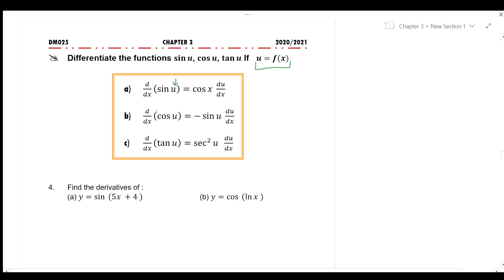To differentiate cos u, the answer is negative sine u multiplied by derivative of function u. And the differentiation of tangent u is equal to secant squared u multiplied by derivative of the function u.